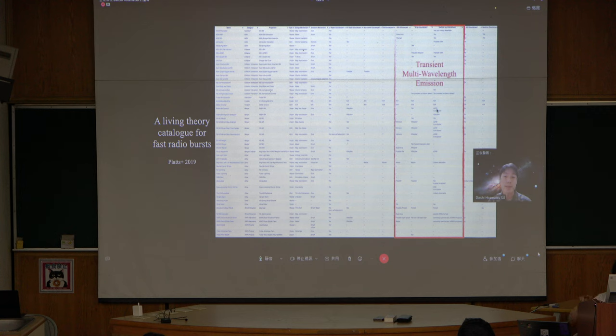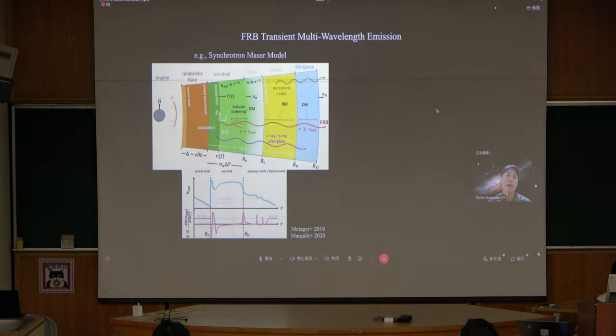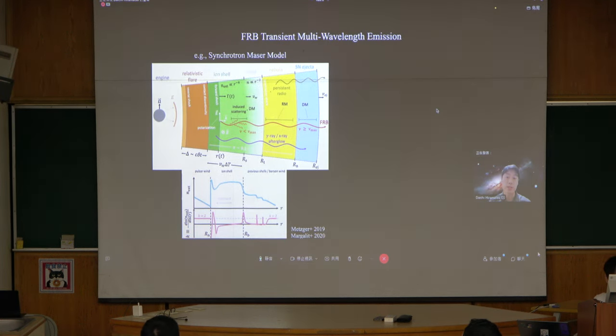As Nino-san mentioned, this is like early days for gamma ray burst research, where significant advance came from transient multi-wavelength detections. This is the parameter space that I'm interested in. What do we expect for FRB transient multi-wavelength emission?